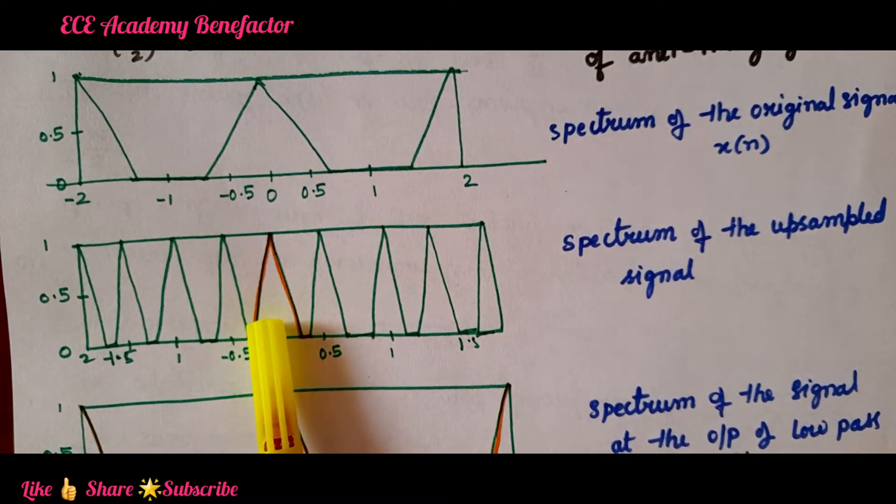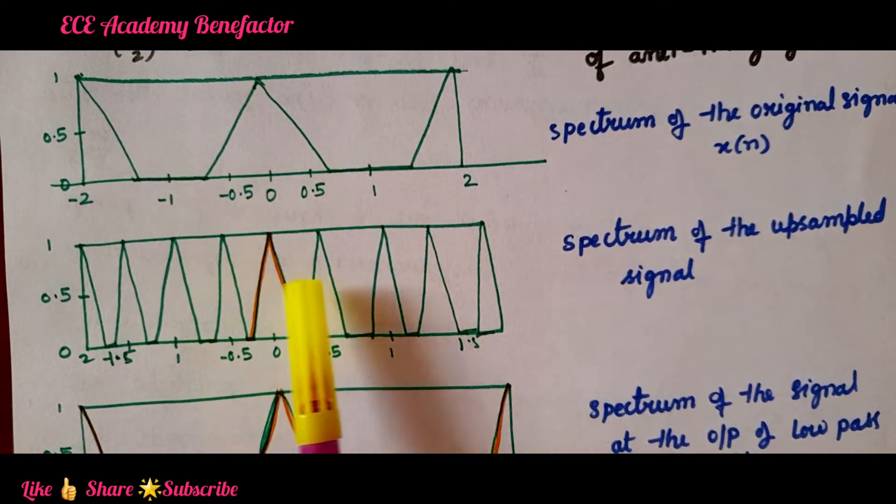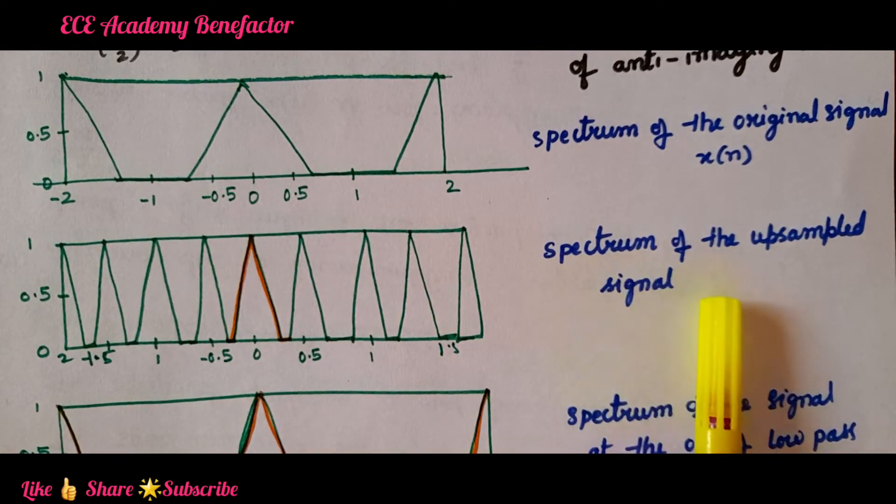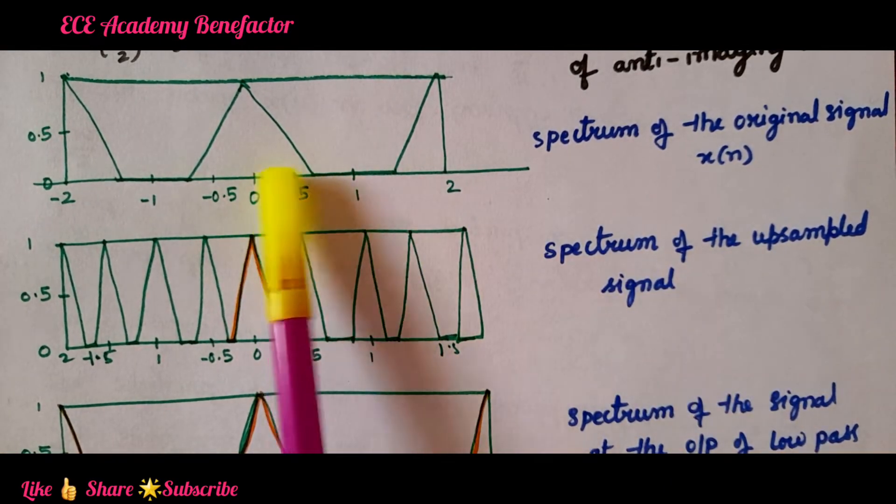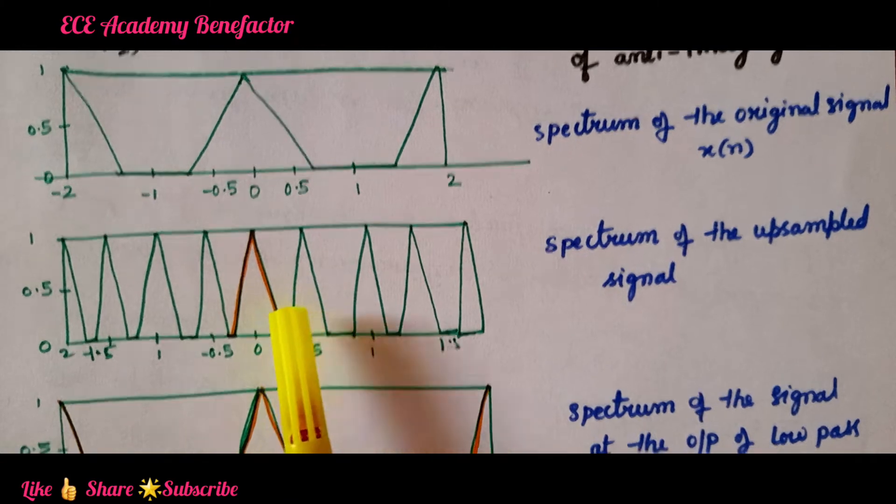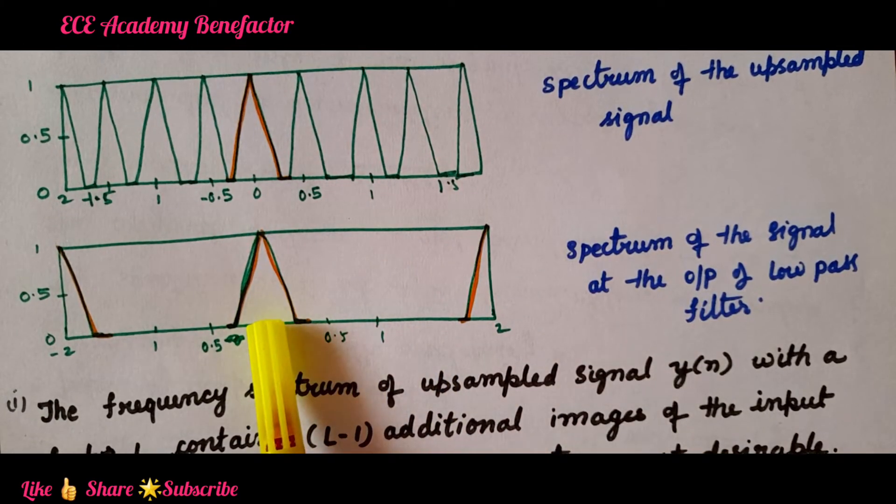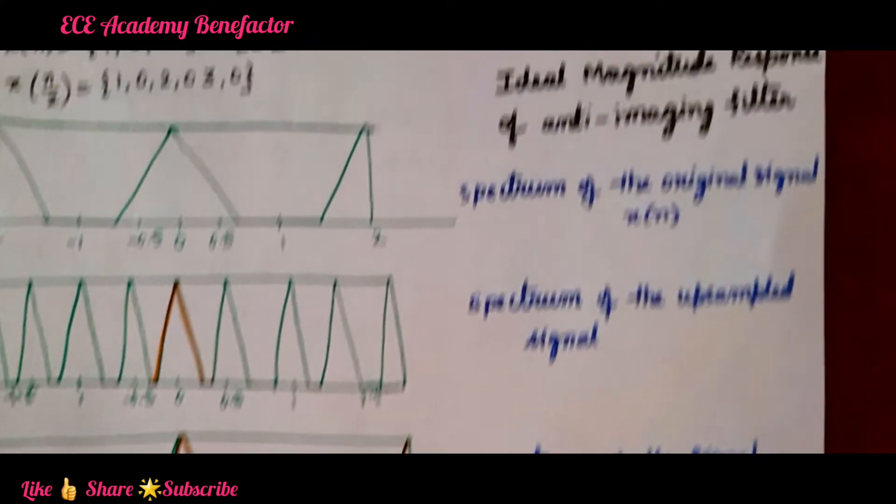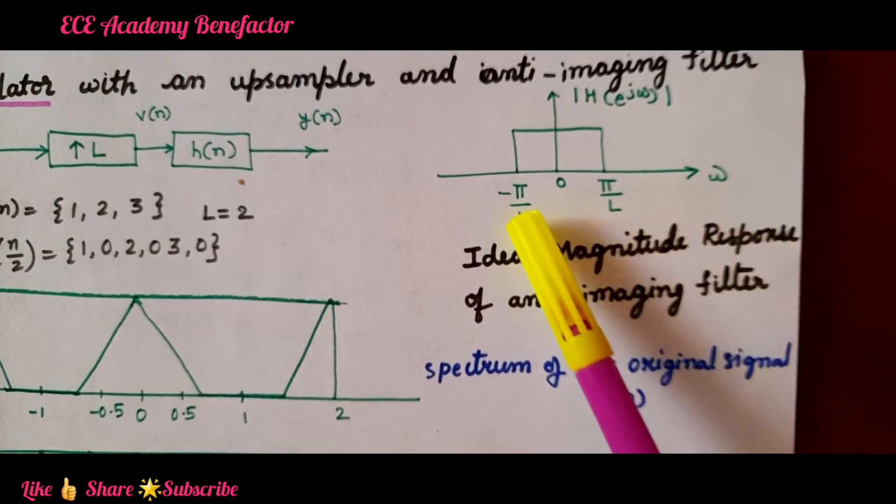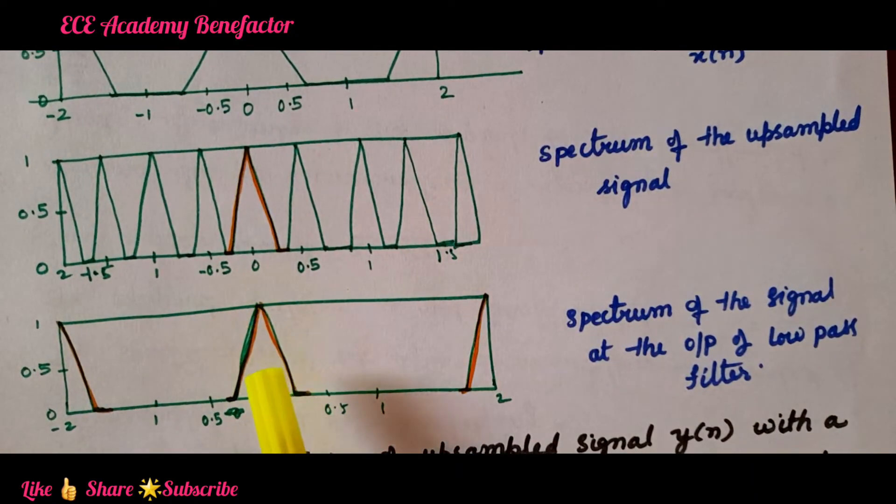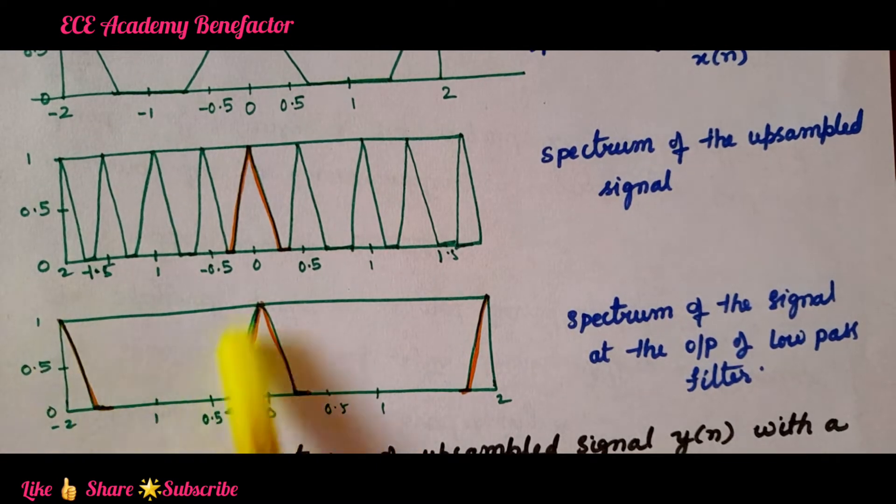What is happening? Along with the x(n) there are some image spectrum also. This is a spectrum of the upsampled signal. This is a spectrum of this original signal x(n). This is a spectrum of the upsampled signal which is containing the image spectrum also.